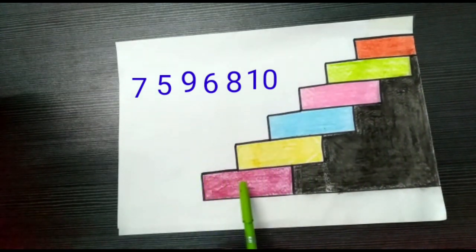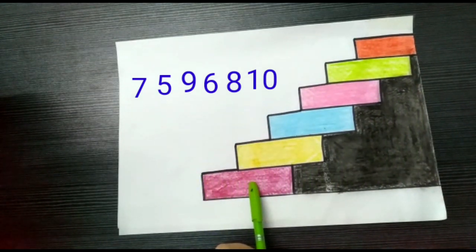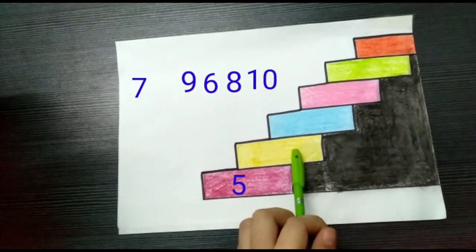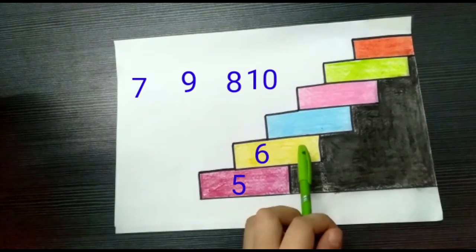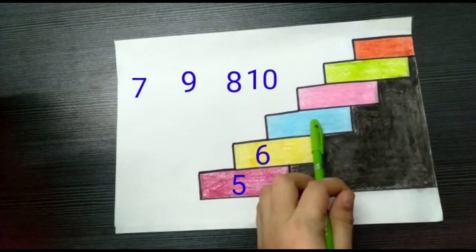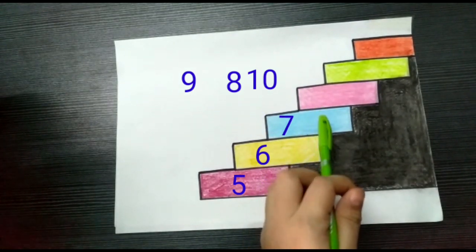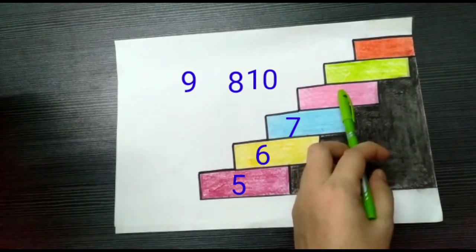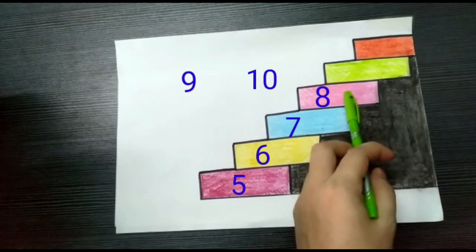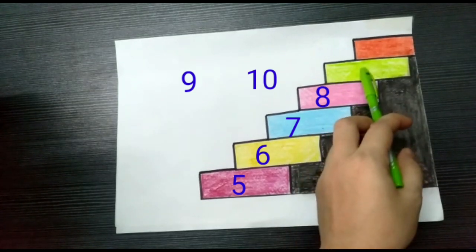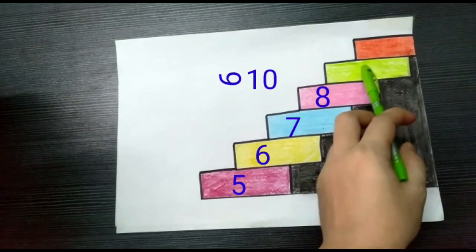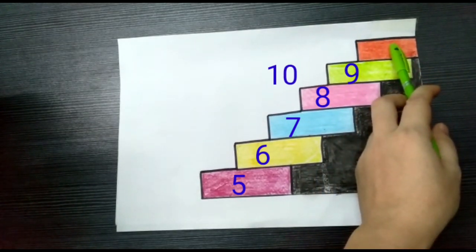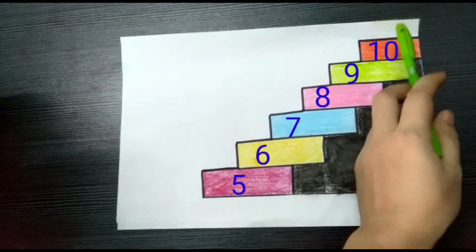Here we go. The red step is number 5. The next yellow step is number 6. Then comes the blue step which is number 7. Followed by the pink step which is number 8. The green step is number 9, and the orange step is number 10. That's right. Very good.